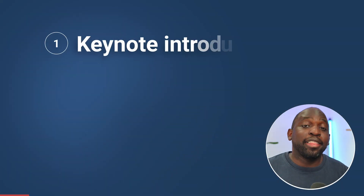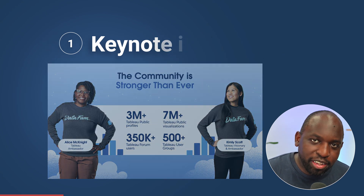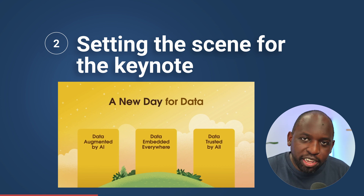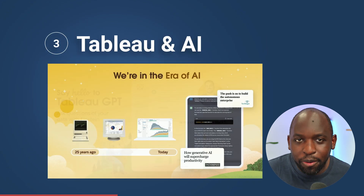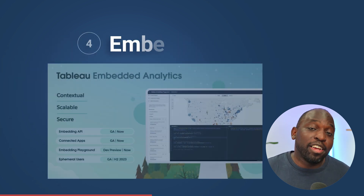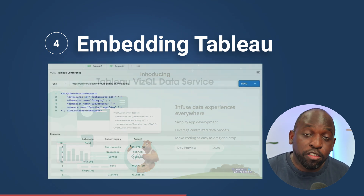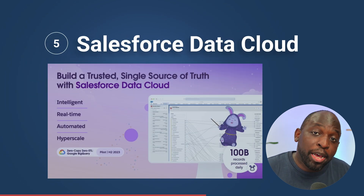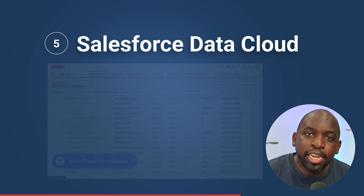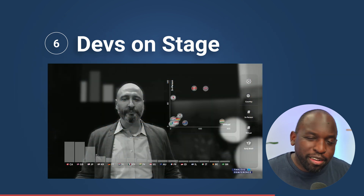Let's list them out. First, we had the introduction, which set the tone for the whole conference and answered questions about Tableau, Salesforce, and the community. The second section was context-setting for the rest of the keynote, talking about the industry in general. Third was Tableau and AI — the first main section showcasing what they're going to do with AI going forward. The fourth section was about how Tableau fits into any analytic stack through embedding, with a couple of new features announced. The fifth was about Salesforce Data Cloud — 'trusted data for all' — showing how Salesforce and Tableau work together. And last, we had Devs on Stage, which has been tagged onto the end of the keynote for the last two conferences, with an absolute blockbuster range of features.